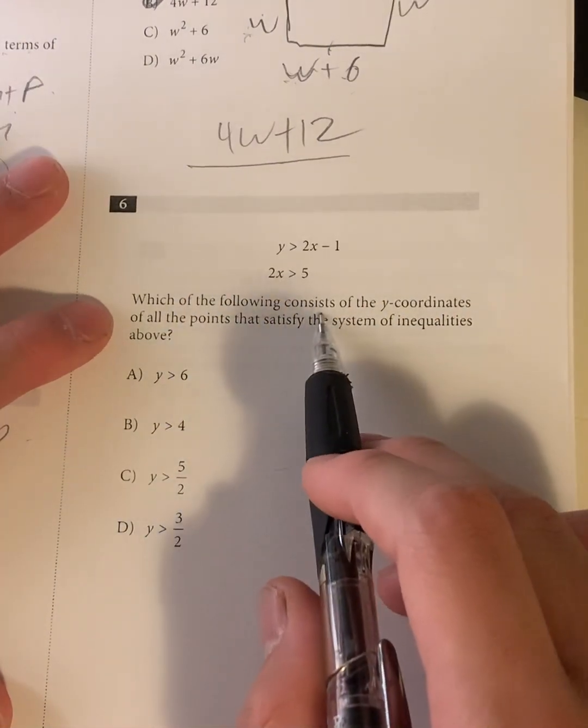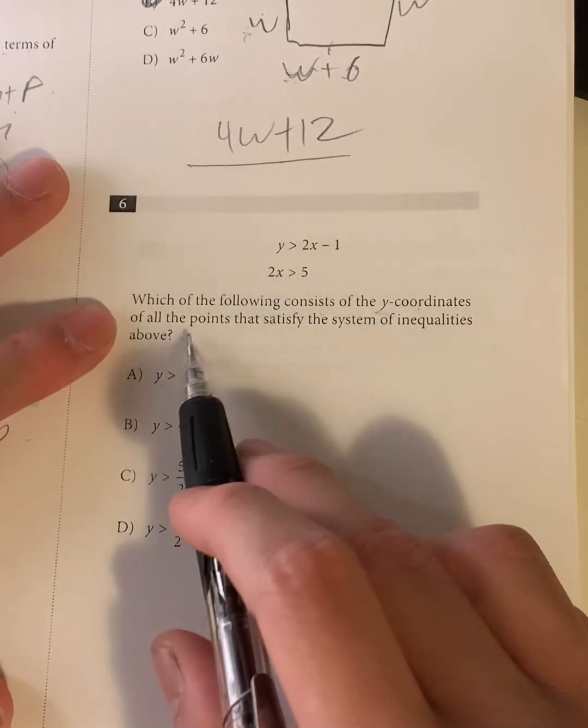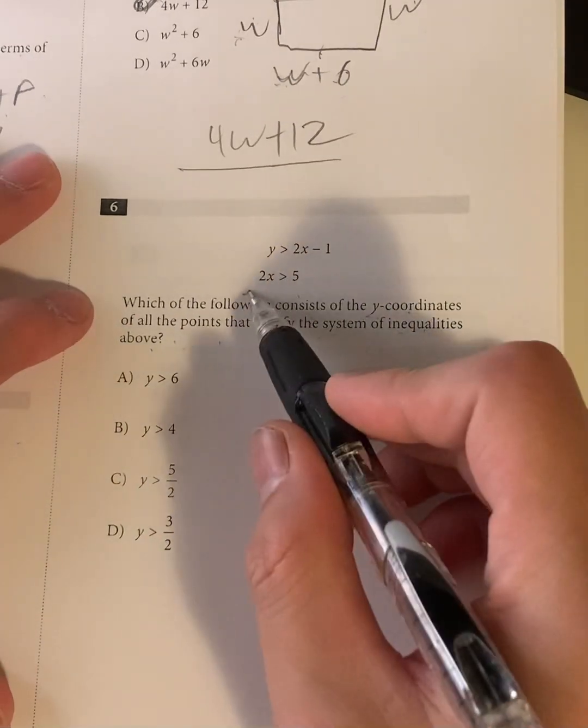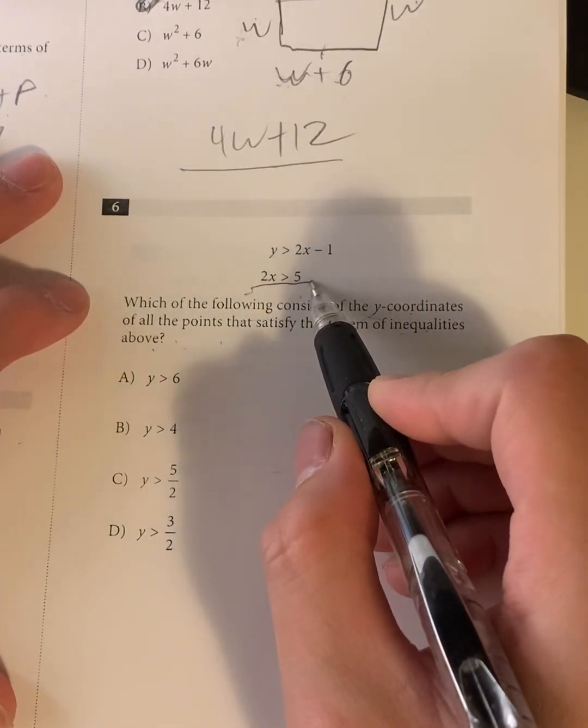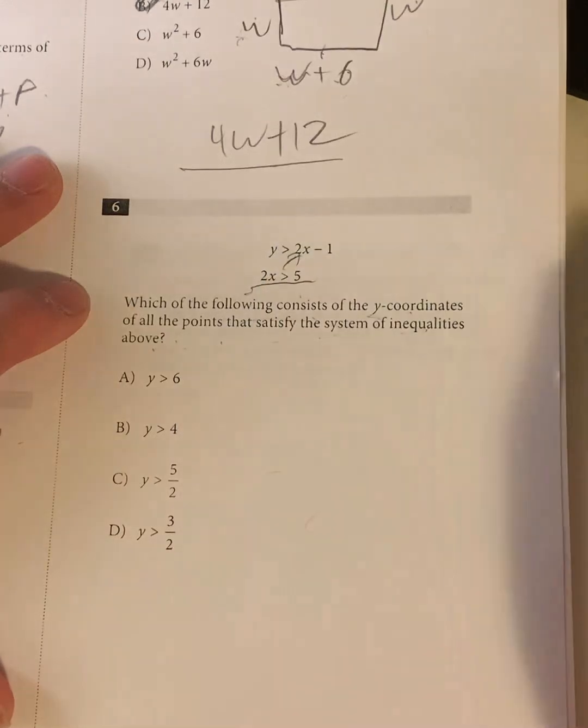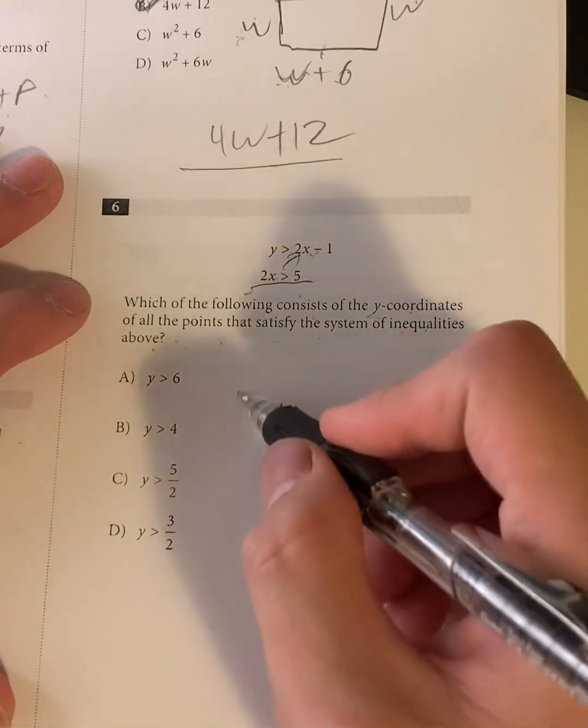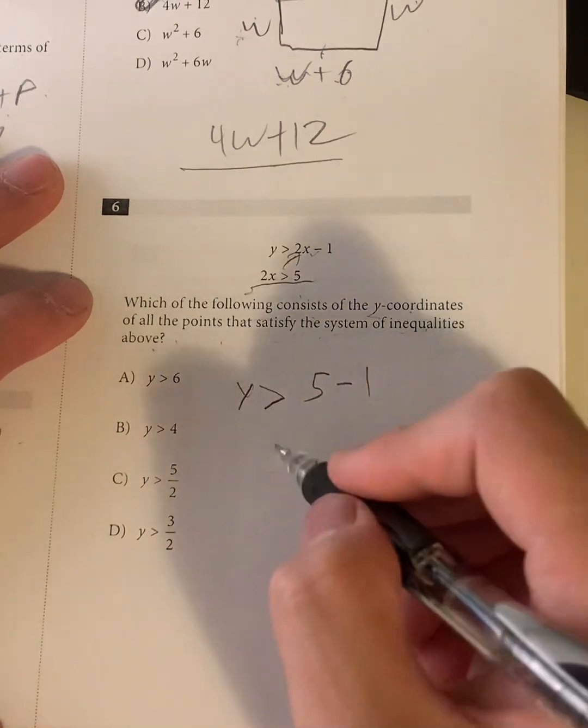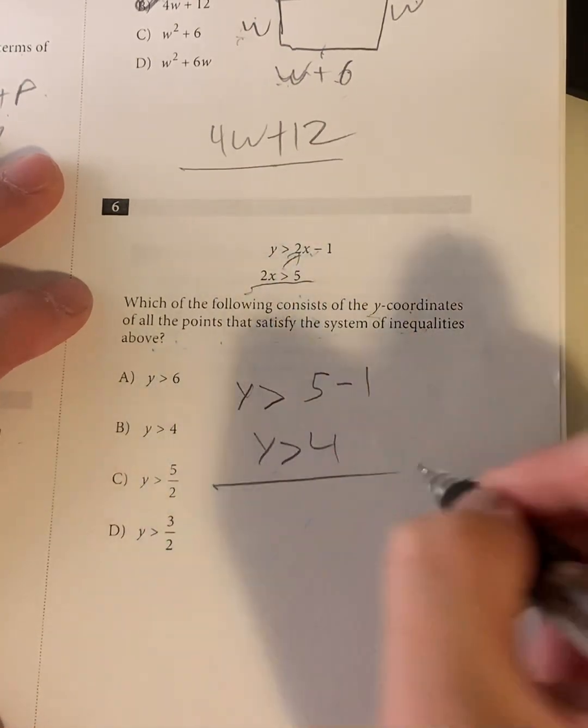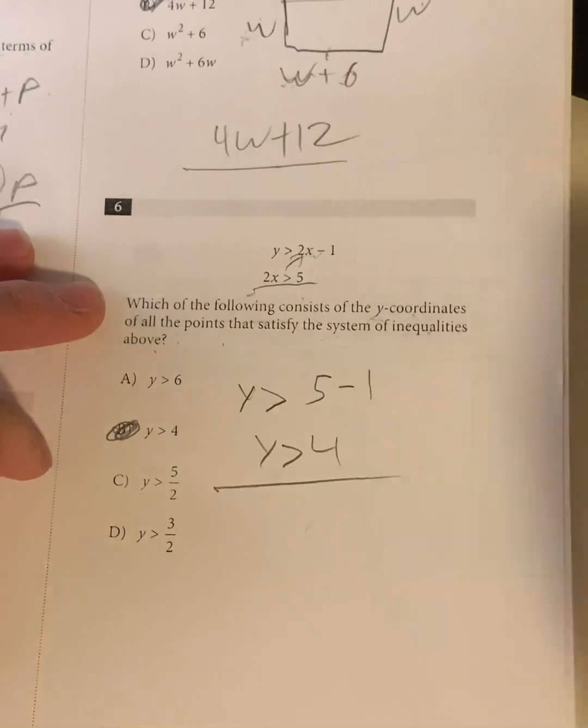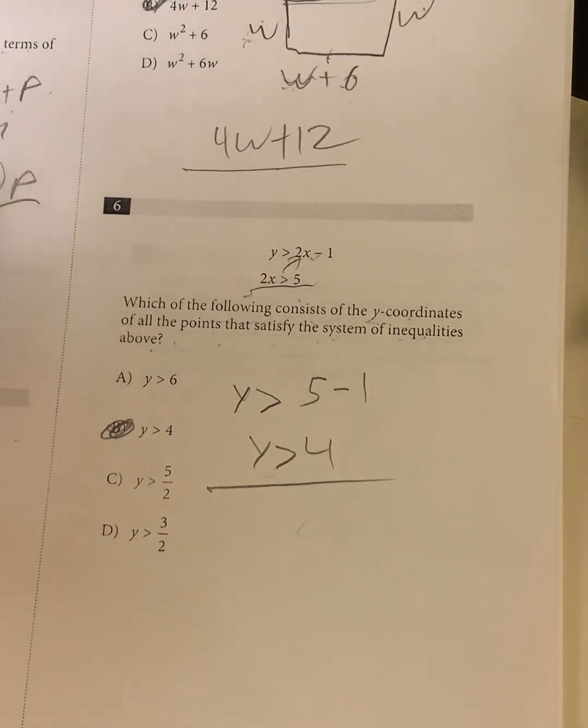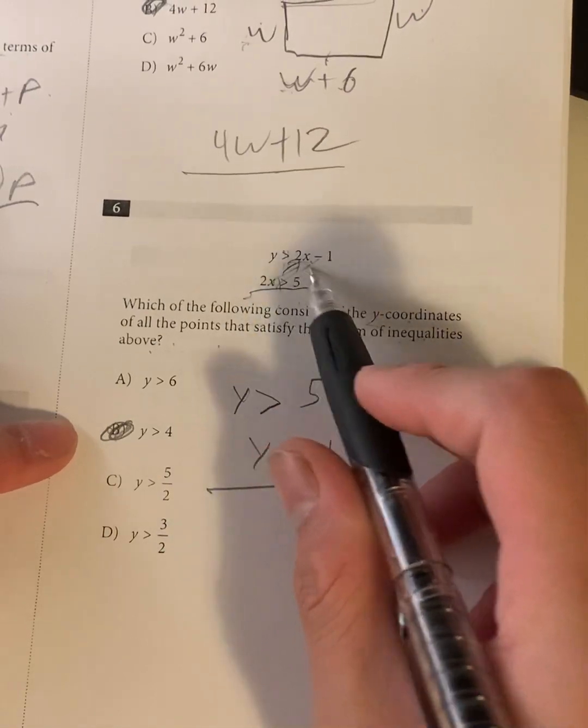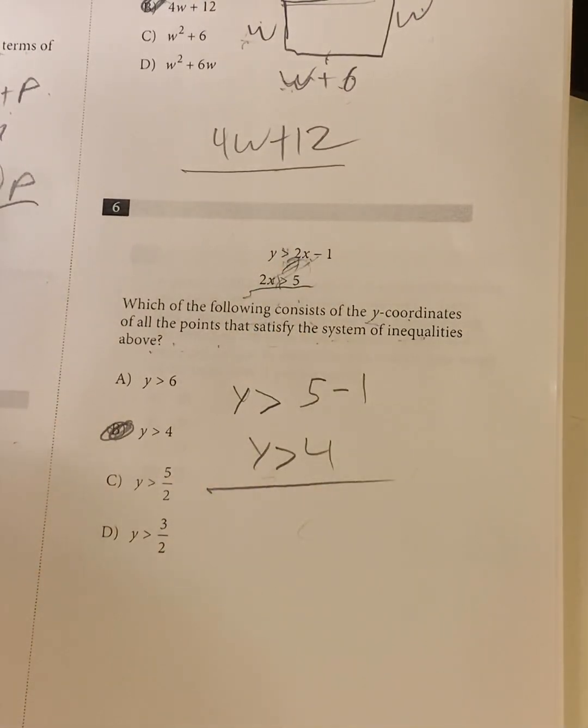Question 6. Which of the following consists of the Y coordinates of all points that satisfy the systems of equations above. So basically, I see that 2X has to be greater than 5. And there's also a 2X in this equation. So why don't we just plug it in? So Y has to be greater than 5 minus 1, basically. I mean, Y has to be greater than 4. Your answer has to be B. I guess this question requires a little bit of logic, as both sides are facing the same way. So that's why you're able to plug it in. Otherwise, you can't really do that.